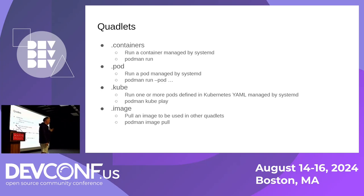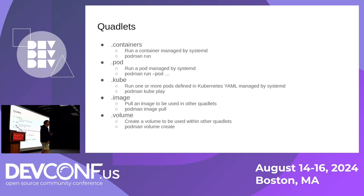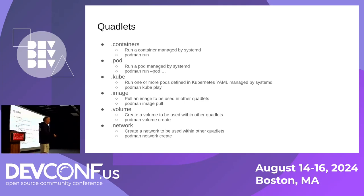Another quadlet is a .image, which is basically the podman pull command. When systemd starts the service, if the image doesn't exist on the machine or has been updated, systemd will automatically trigger a pull to download that image. Through the power of systemd, a kube, pod, or container can rely on an image, so we can link all these things together as required services. There's also .volume and .network — systemd unit files matching standard Podman commands, all linkable through systemd's 'wants' and 'requires' directives.